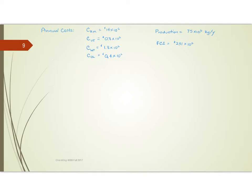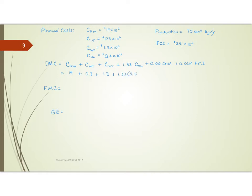For the direct manufacturing cost, we take raw materials (14 million) plus waste treatment (1.8 million) plus 1.33 times operating labor (0.4 million) plus 0.03 times the cost of manufacturing plus 0.069 times FCI (23 million). This gives a direct manufacturing cost of 18.719 million plus 3% of the cost of manufacturing.